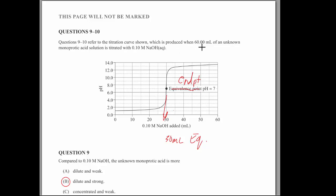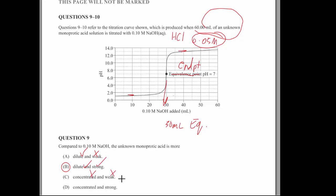So titration shows when 60 mils of unknown monoprotic is titrated with 0.1. So maybe it's a HCl. And so that would be 0.05 molar. You can see there it's a strong base and a strong acid. So compared to 0.1, the unknown acid is definitely dilute, but not weak. It's dilute and strong. It's definitely concentrated or weak. Or concentrated and strong. So that's B, definitely.